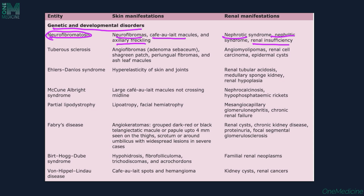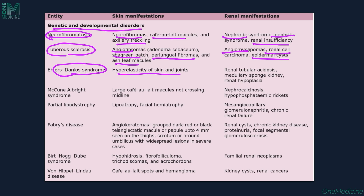Tuberous sclerosis is another condition wherein we have angiofibromas, shagreen patch, periungal fibromas, and ash-leaf macules. Associated renal manifestations would be angiomyolipomas, renal cell carcinoma, and epidermal cysts. Ehlers-Danlos syndrome is associated with hyperelasticity — increased elasticity of the skin and joints — and renal manifestations include renal tubular acidosis, medullary sponge kidney, and renal hypoplasia.